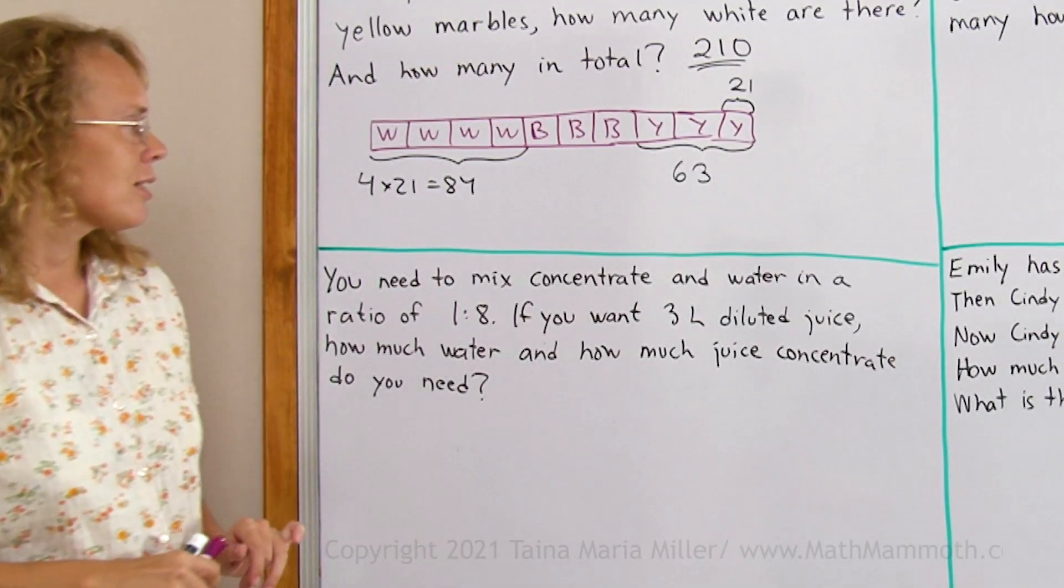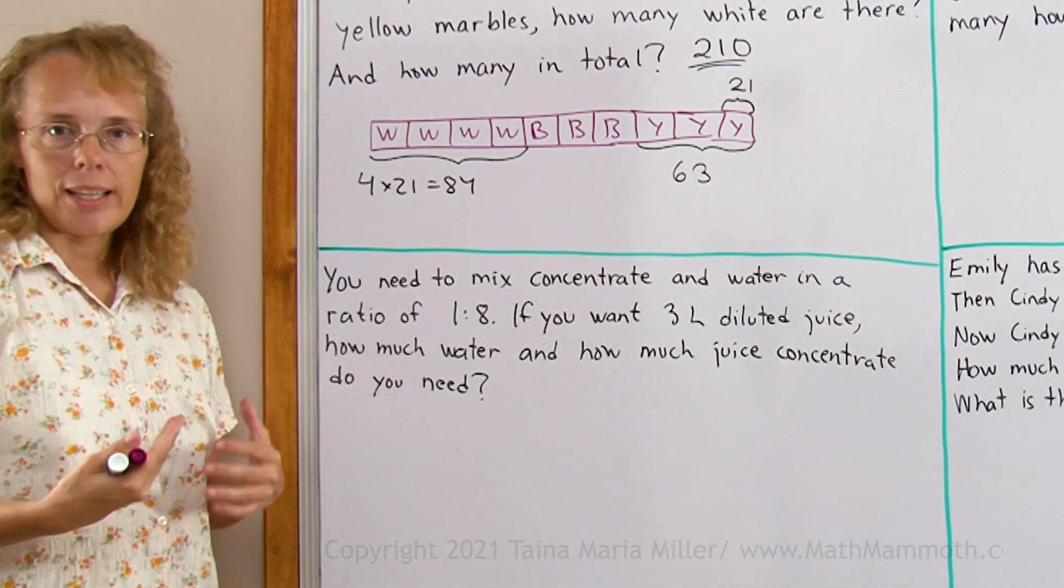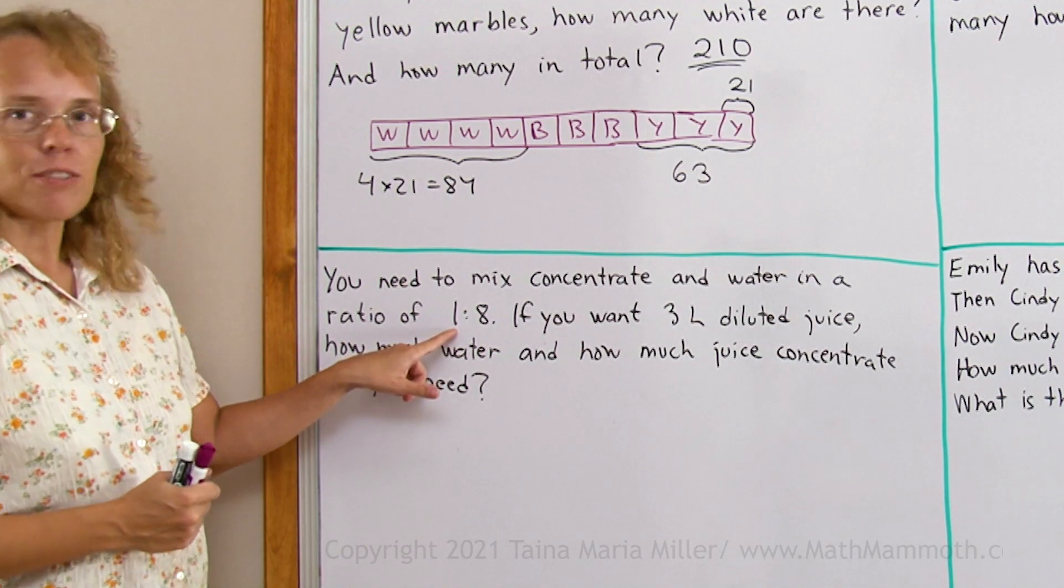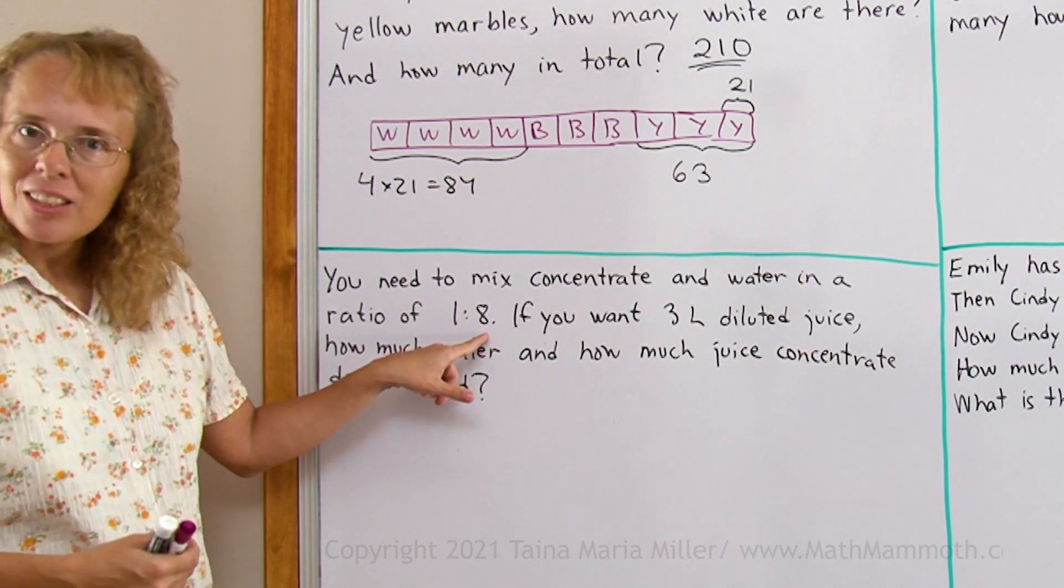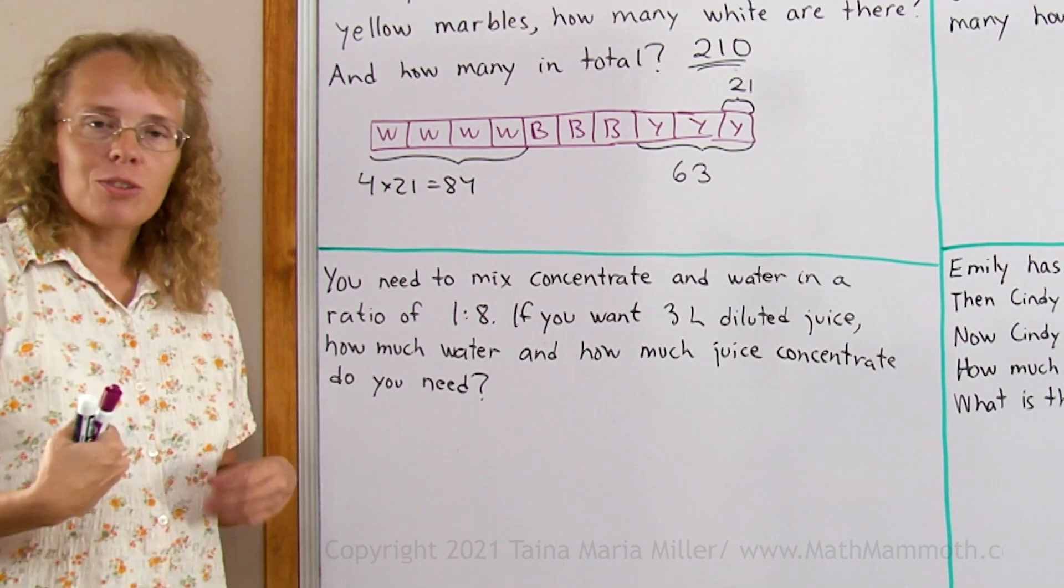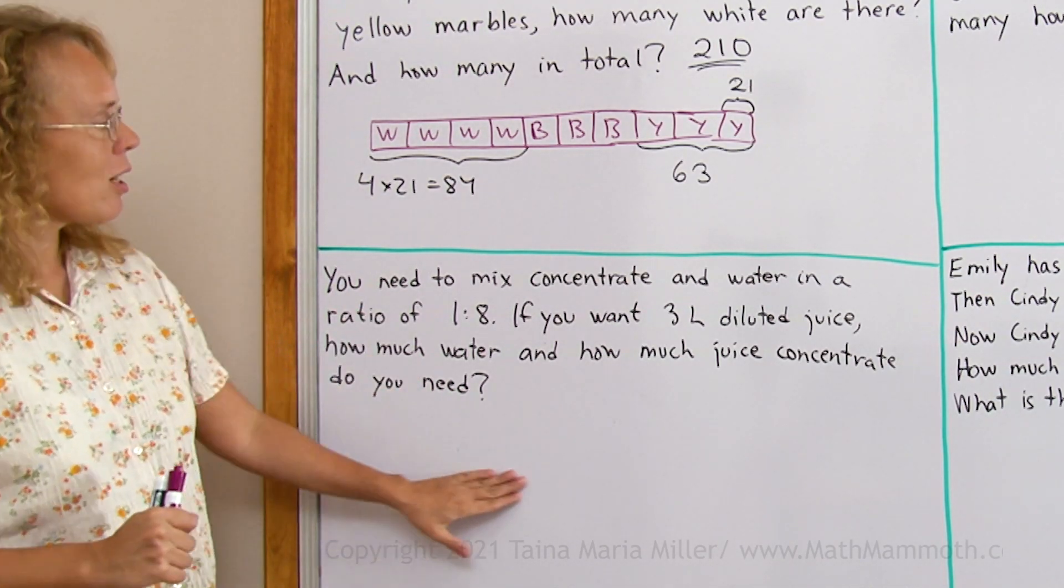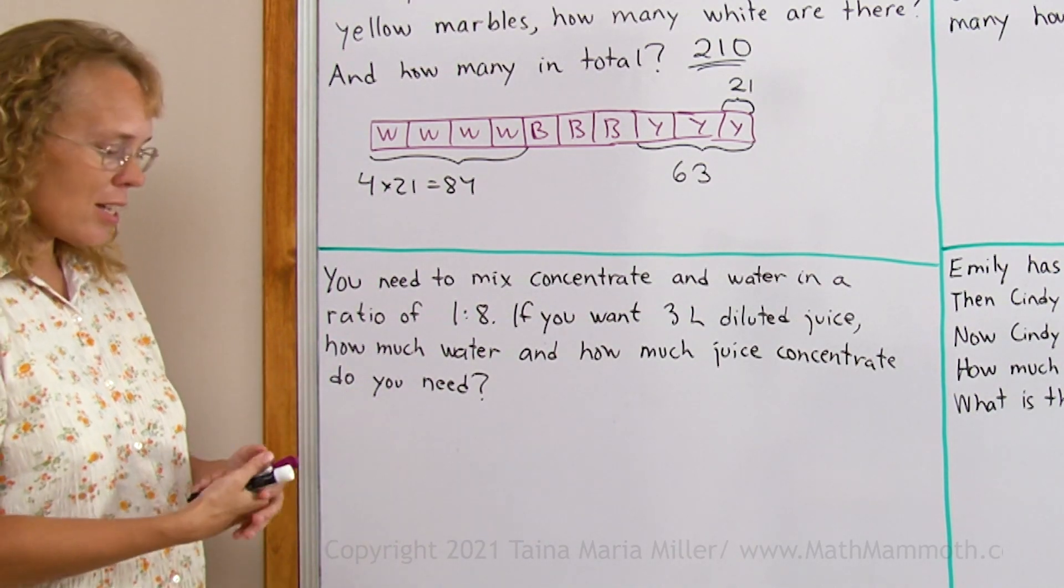You need to mix concentrate, juice concentrate for example and water in a ratio of 1 to 8. One part of concentrate to 8 parts of water. If you want 3 liters diluted juice, in the end you want to have 3 liters total, then how much water and how much juice concentrate do you need?